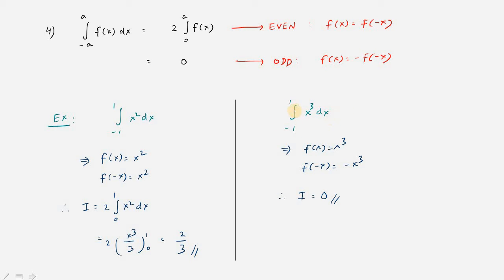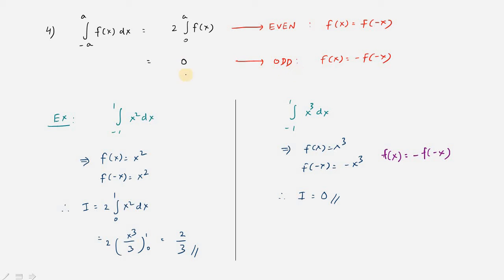Example 2: integral from −1 to 1 of x³ dx. Again we have −a to a, so check even or odd. f(x) = x³; substituting x with −x gives f(−x) = (−x)³ = −x³, so f(x) = −f(−x) — it's an odd function. For an odd function, the integral equals zero.